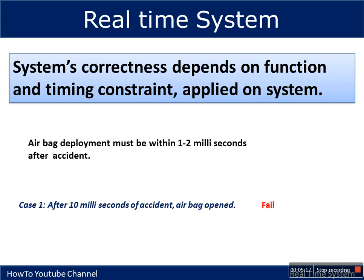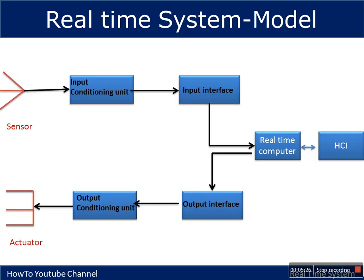A new correctness criterion is defined for real-time systems: time plus functioning. The architecture of a real-time system includes sensors that sense and provide input to an input conditioning unit. Since the voltage level of sensor signals is very low, the input conditioning unit amplifies those signals and provides them to an input interface, through which the real-time computer is connected for all processing. Similarly, an output interface provides signals to an output conditioning unit, which converts signals for actuators that perform the actual physical work.